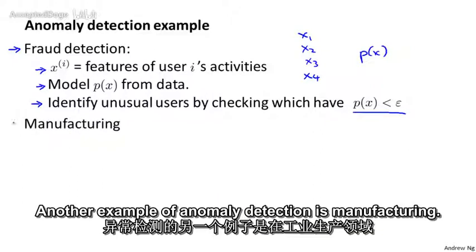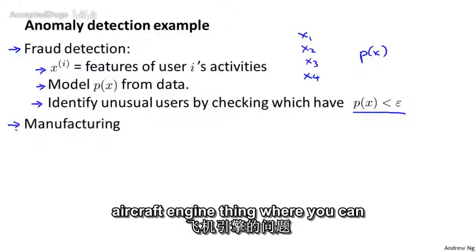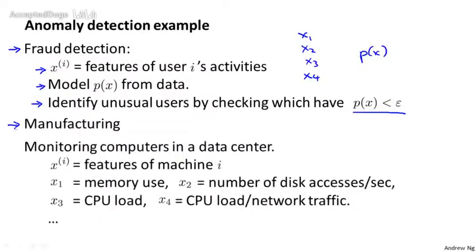Another example of anomaly detection is manufacturing. So already talked about the aircraft engine thing, where we can find unusual aircraft engines and send those for further review.